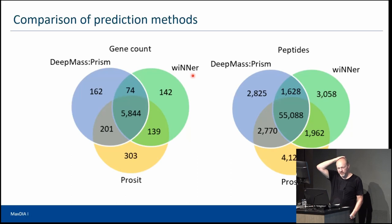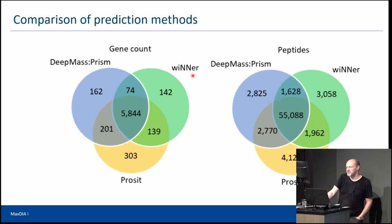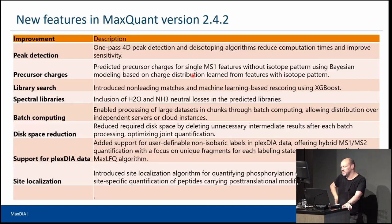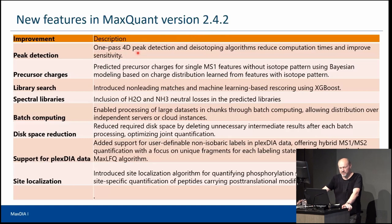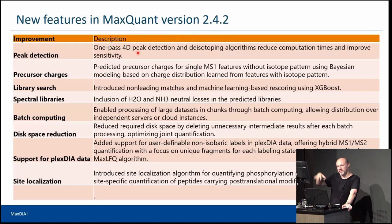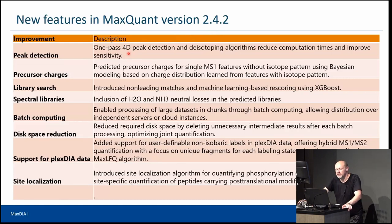Now let's look at the new features in the latest release, version 2.4.2. One improvement is that the 4D peak detection used for TIMSTOF Pro data has been rewritten to stream once through the data. Before, it accessed the data many times; now only one data access is needed, making it much faster than it used to be.